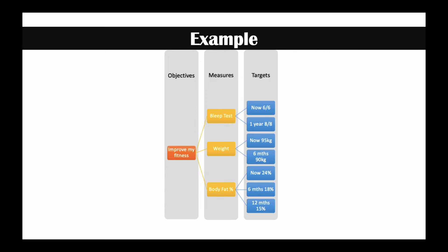One measure I thought of is a bleep test — a measure of fitness used by the fitness industry. Another measure could be my weight, to see my change in weight. And the third one could be my body fat percentage. So if I'm getting fitter, losing weight, and my body composition is changing, that tells me I'm probably on track to improving my fitness.